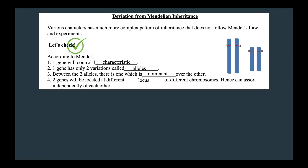Before we begin discussing linked genes in detail, let's refresh our memory on Mendelian experiments. According to Mendel, one gene will control one characteristic. One gene has only two variations called alleles. Between the two alleles, there is one which is dominant over the other. And lastly, the two genes will be located at different loci on different chromosomes, hence can assort independently of each other.